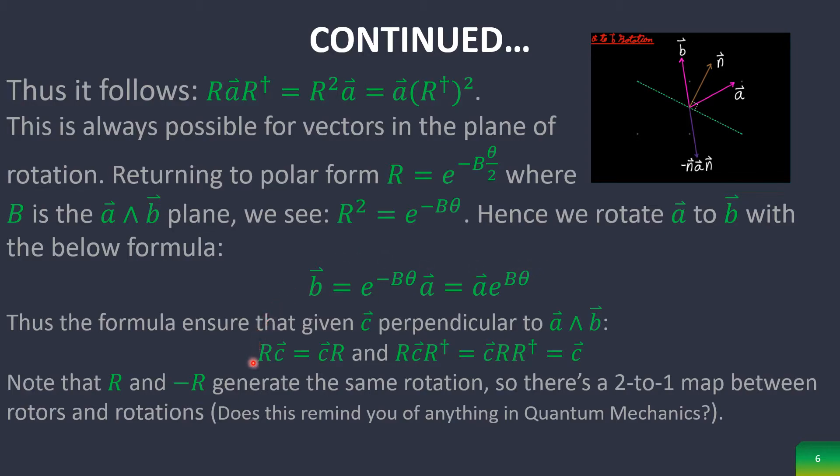This is an easy way to show that any vector C perpendicular to the A∧B plane is unaffected by the rotors. And R and negative R rotors generate exact same rotation. So there's a 2 to 1 map between rotors and rotation.